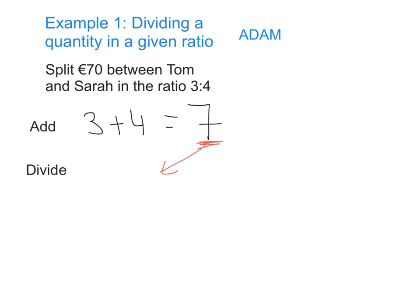So we're going to do 70 euro divided by 7, which gives me 10.